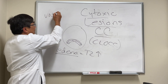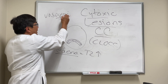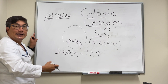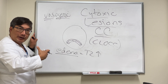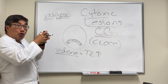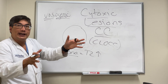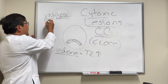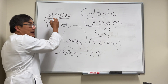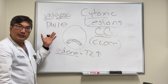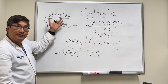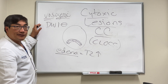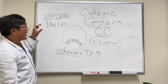Vasogenic edema originates from the vessel — it's just too much water. The edema comes from breakdown of the blood-brain barrier; more water comes out, but that water is not restricted in its movement. Therefore, diffusion weighted imaging will be negative and will not show restricted diffusion if it's just leaky blood vessels. It will be bright on T2, but negative for restricted diffusion on DWI.